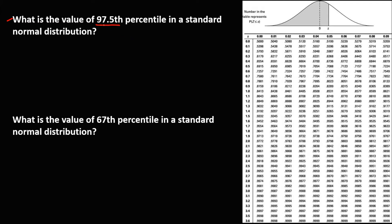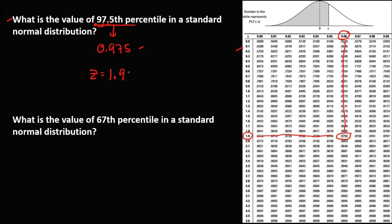First, we need to convert this 97.5 percentile to decimal. We just need to move two places to the left, or divide this number by 100, so we have 0.975. Then to find the value, we need to look for 0.975 in this positive Z table. Therefore, the Z value is 1.96.